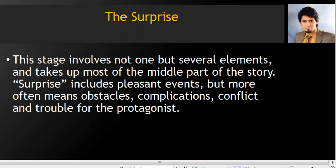The surprise covers most of the middle part of the story and may include pleasant events, but more often it means obstacles. For example, in Ertugrul, when Ertugrul's brother Sarum came — it was so surprising, it was so good — but he was a person who actually created problems for Ertugrul. So surprise involves several elements that can create obstacles, complications, conflict, and troubles for the protagonist.